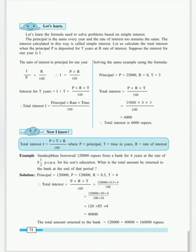The 40,800 rupees we found is the interest. We are asked to find out the amount to be paid after 4 years. So amount is equal to principal plus interest: 1,20,000 plus 40,800 rupees equals 1,60,800 rupees. Thank you.